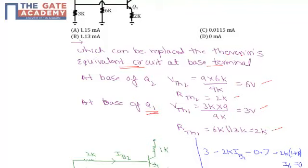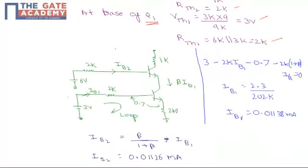By applying Thevenin's theorem, the circuit will have 2kΩ, this is Q2, this is Q1, with current IB2 and 2kΩ resistance, and 6 volts. For transistor Q1, the current flowing through is IB1 with 3 volts and 2kΩ. VBE value is 0.7V, and the emitter resistance RE is 2kΩ.